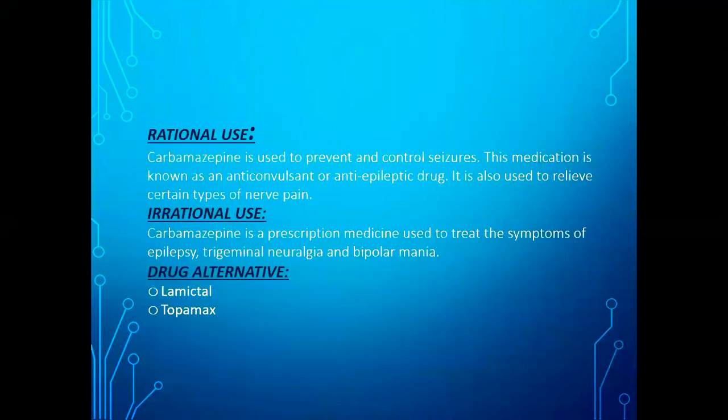What are the rational uses of carbamazepine? It is used to prevent and control seizures. This medication is known as an anticonvulsant or anti-epileptic drug, and it is also used to relieve certain types of nerve pain. What are the irrational uses? Carbamazepine is a prescription medicine used to treat the symptoms of epilepsy, trigeminal neuralgia, and bipolar mania.